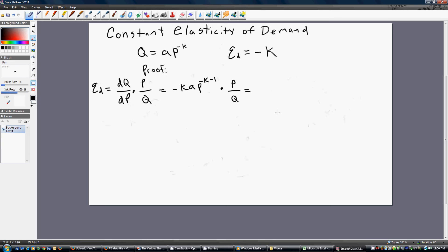Next thing I want to do is to substitute out Q for A times price raised to the minus K power. So doing that, rewriting, we get this result. So I just substituted out for Q for the demand function.